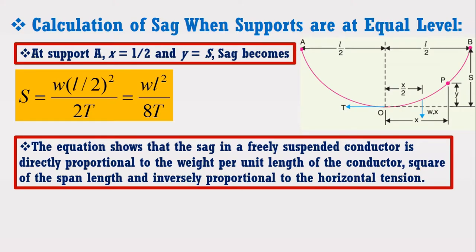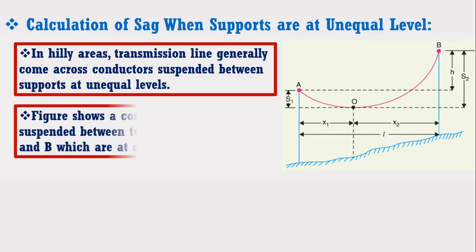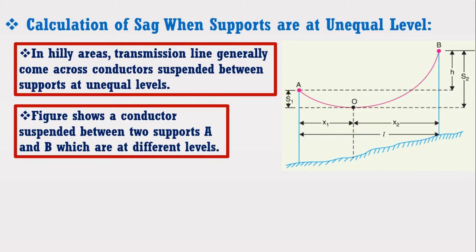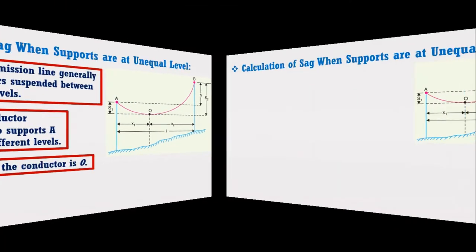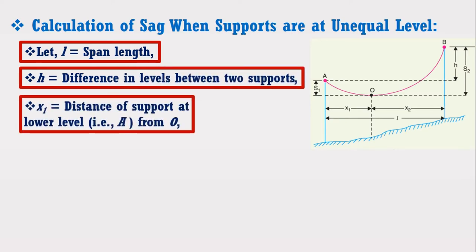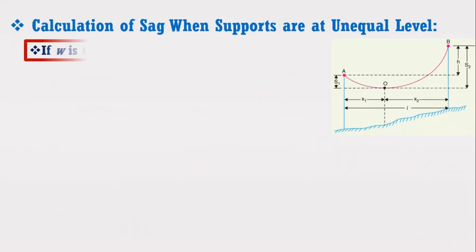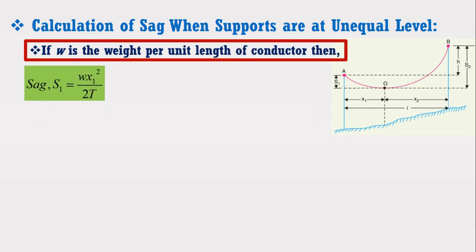Now I am going to derive an expression for sag calculation when supports are at unequal levels. In hilly areas, transmission lines generally come across conductors suspended between supports at unequal levels. The figure shows a conductor suspended between two supports A and B at different levels, with the lowest point O. Let L be the span length, H be the difference in level between the two supports, X1 be the distance of the lower support A from O, X2 be the distance of the higher support B from O, and T be the tension in the conductor. If W is the weight per unit length, then sag S1 equals W X1 squared upon 2T, and sag S2 equals W X2 squared upon 2T.